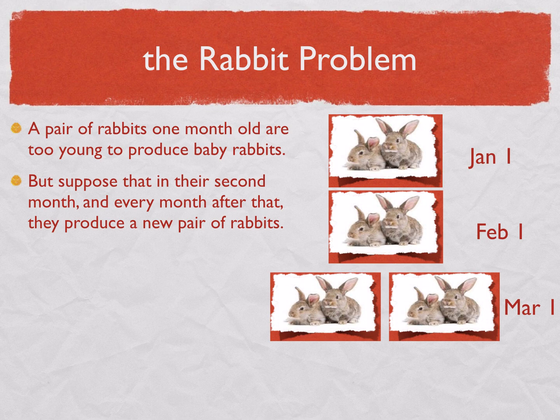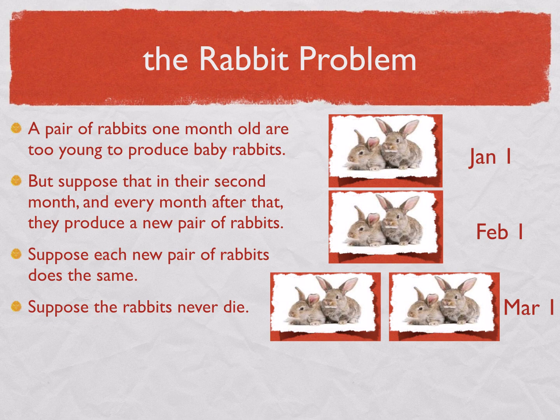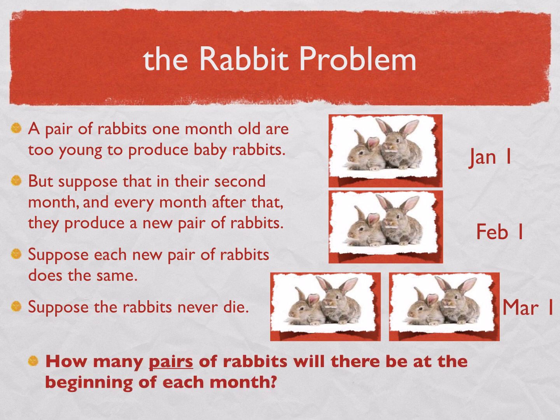Notice there was one pair of rabbits alive on January 1st — the original pair. On February 1st, it was still one pair of rabbits alive. But by March 1st, they had produced their first pair of offspring, so on March 1st there are two pairs of rabbits. Suppose that each new pair of rabbits does the same, and in this fictional problem we must also suppose that the rabbits never die. This just perpetuates over and over again. The problem we want you to solve is: how many pairs of rabbits will there be at the beginning of each month?